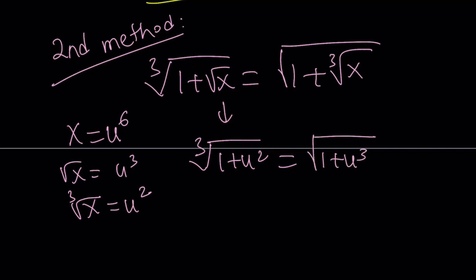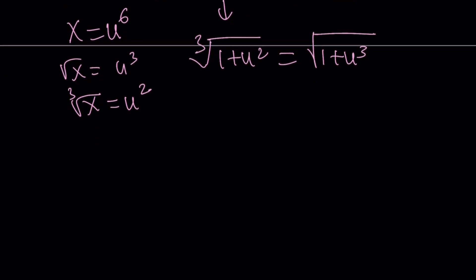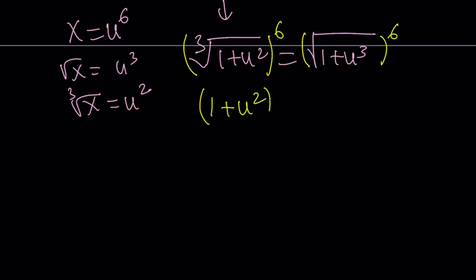We still have radicals, but inside the radicals it's much better now. Let's raise both sides to the sixth power to eliminate all radicals. Raising the cube root to the 6th power gives exponent 6 over 3 equals 2, so the left side becomes (1 plus u squared) squared. Raising the square root to the 6th power gives exponent 6 over 2 equals 3, so the right side becomes (1 plus u cubed) cubed.